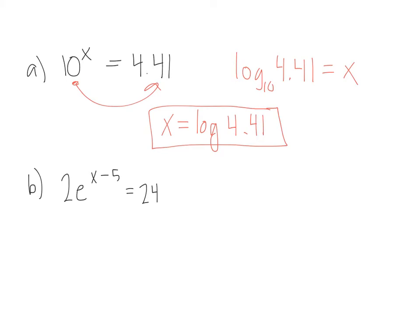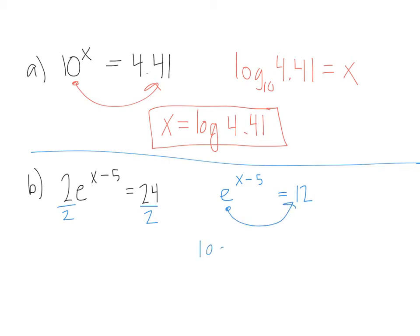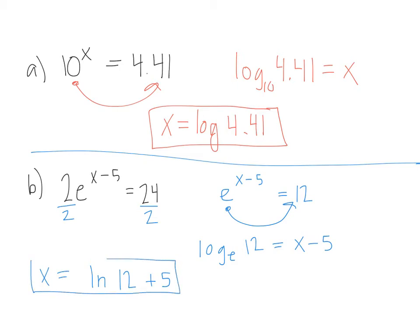They will get a lot harder. When I have my exponential expression, first make sure the exponential group is isolated — so divide by 2, giving e to the x minus 5 equals 12. Now rewrite as a logarithm: log base e of 12 equals x minus 5. Log base e is ln, so the natural log of 12 equals x minus 5. Adding 5 over gives the final answer. You cannot combine the 12 and the 5 because the 12 is being applied to the natural log first, and then you add 5.